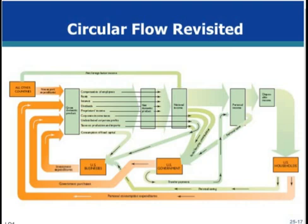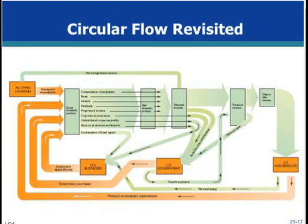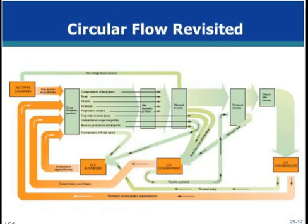Here is the updated circular flow that was introduced in a much simpler form in a previous chapter. This table calculates GDP for 2012 in the United States by both the expenditures approach and the income approach. Note that both methods come to the same conclusion for the year.